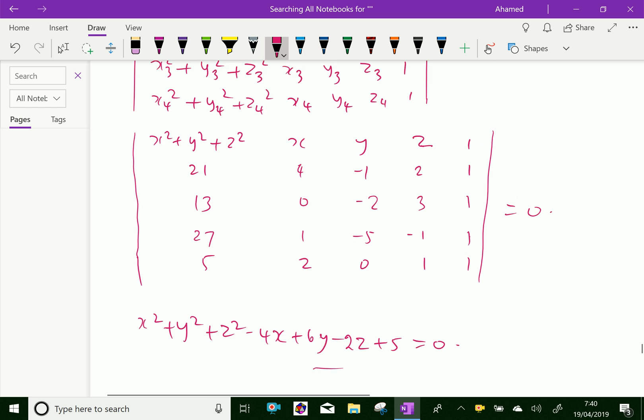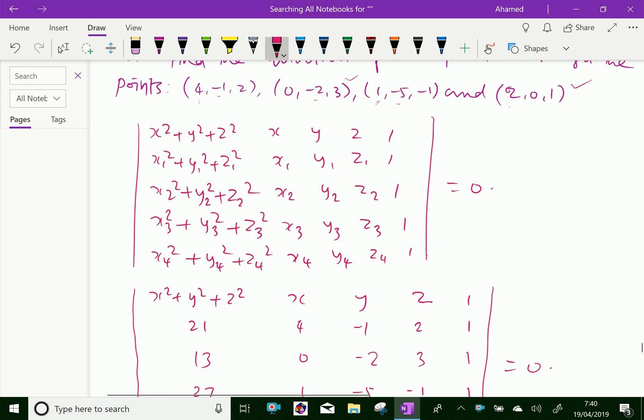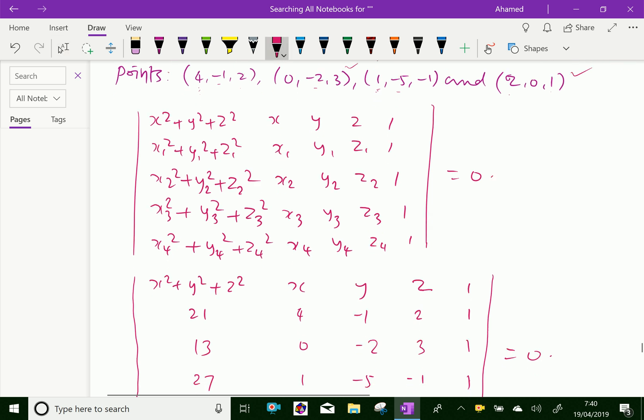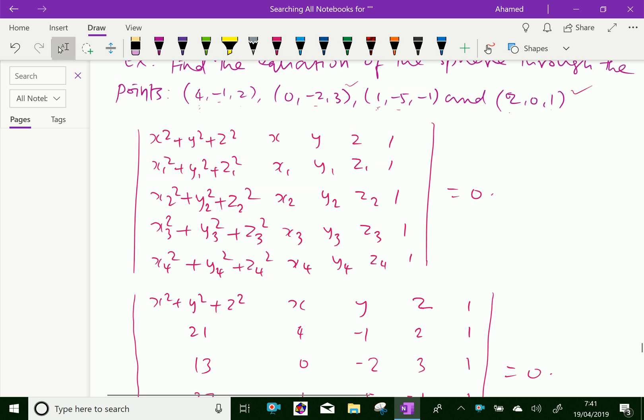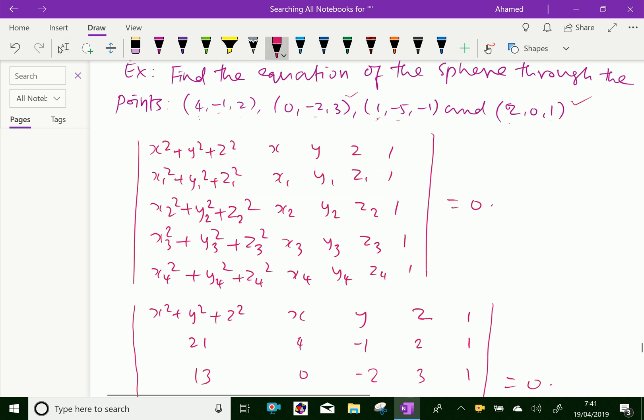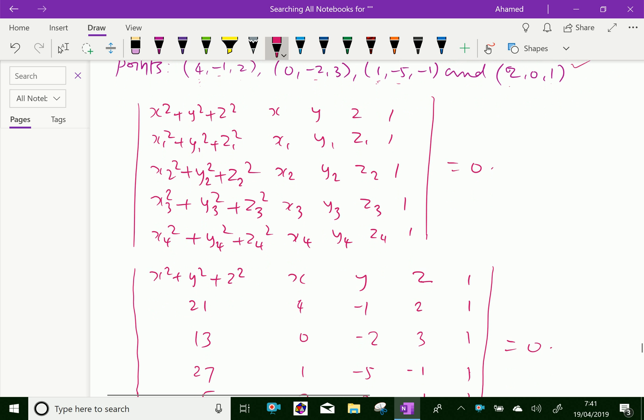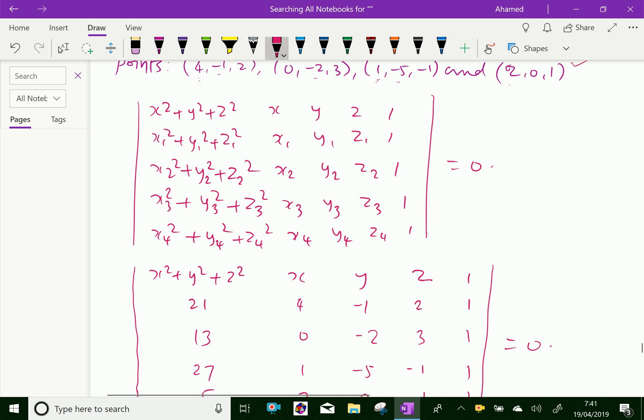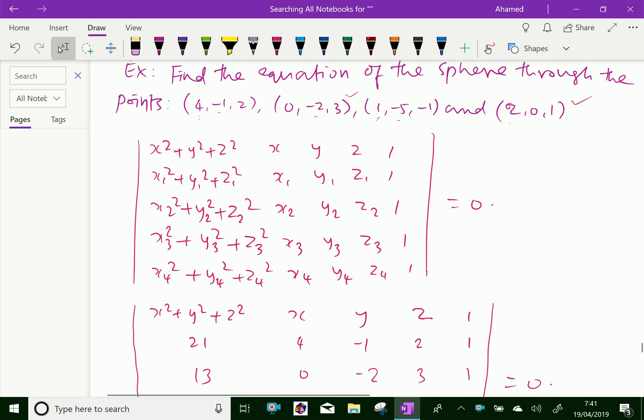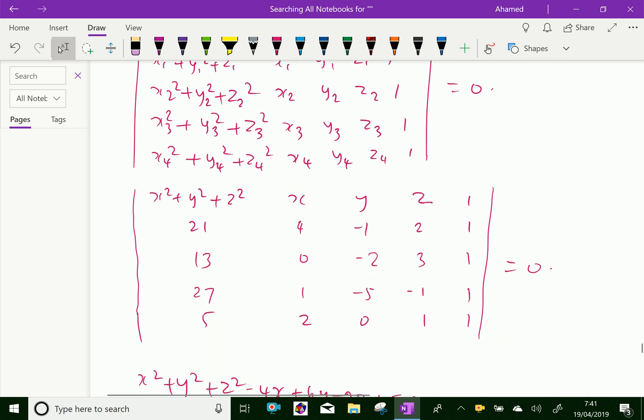Now, let us check one more time here. Remember, that first point is 4² is 16, plus 2² is 4, 20 and 21. Second is 4, 13, then third is 27, fourth is 2² is 4, plus 1² is 5. Now, first point is 4, -1, 2, 0, -2, 3, 1, and 1, -5, 1, and last point is 2, 0, 1. Here, 2, 0, 1.